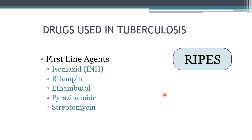For centuries TB was considered a lethal infectious disease, but the introduction of streptomycin and isoniazid in the late 1940s, and rifampin, ethambutol in the 1960s, and pyrazinamide revolutionized treatment. Unfortunately, extensive resistance has developed — not just single-drug resistance but multi-drug resistance, extended drug resistance, and now even total drug resistance has emerged in some countries like India, Iran, and Italy. This is really alarming.